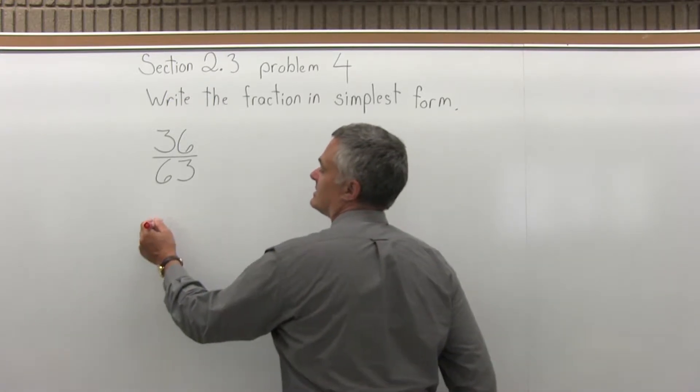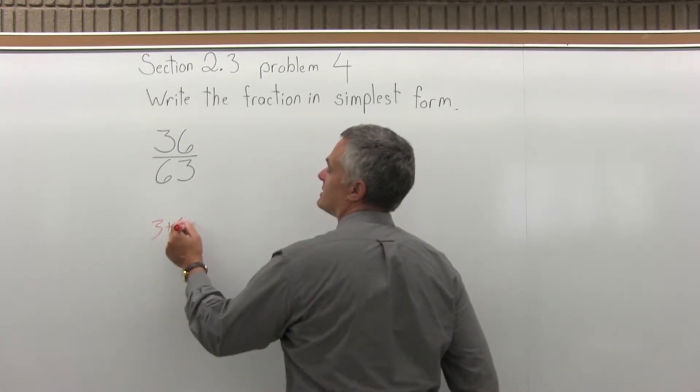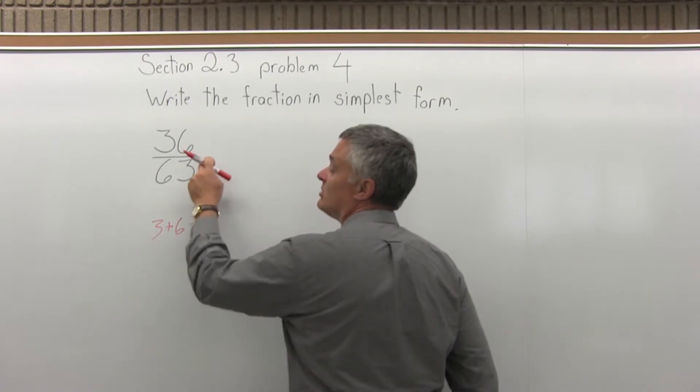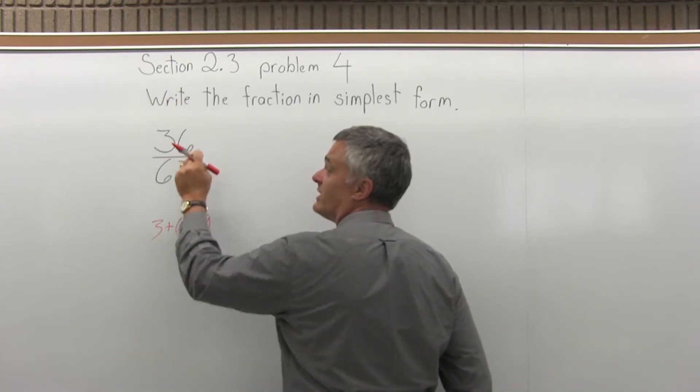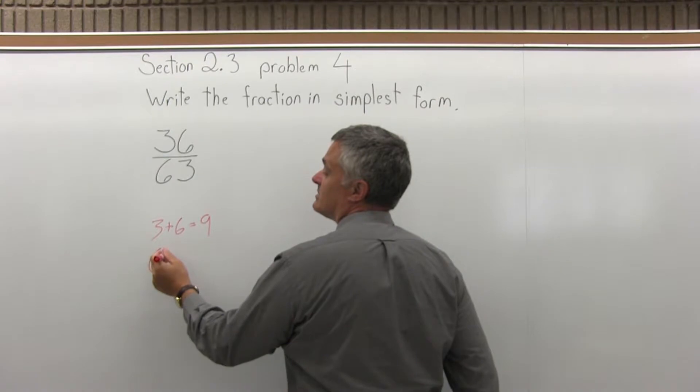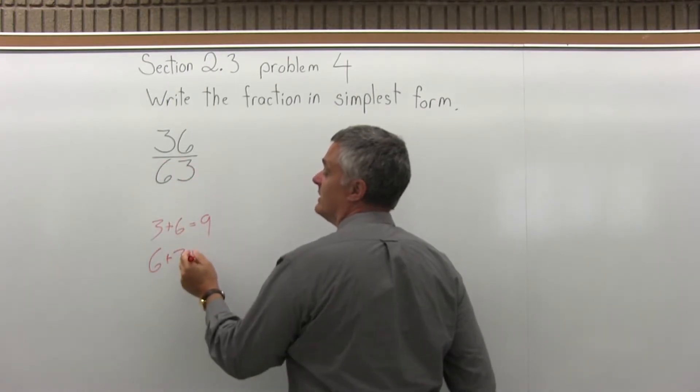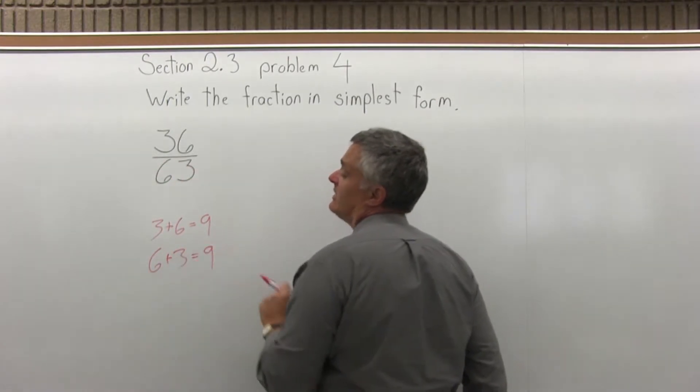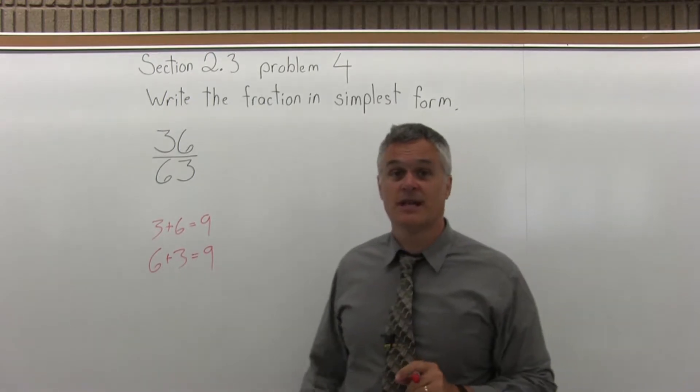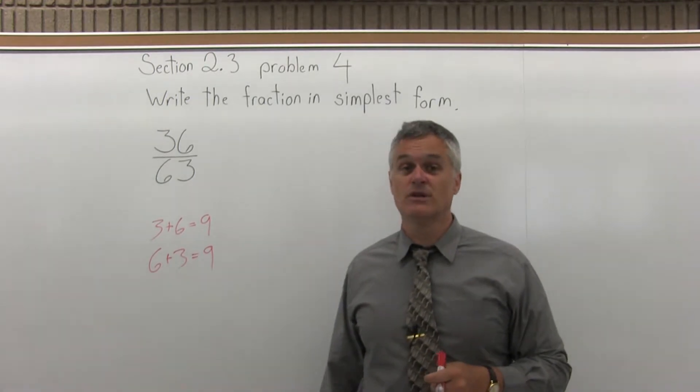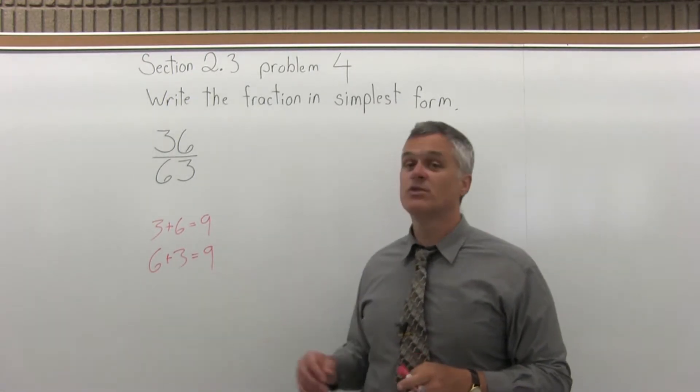So the 36, if I add those digits, 3 plus 6, 3 plus 6 equals 9. 3 divides into 9 evenly, so it'll divide into 36. Now 6 plus 3 for the 63 is actually also 9, and again, 3 divides into 9 evenly, it'll divide into 63 evenly. So I can divide 3 into both evenly.